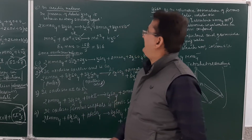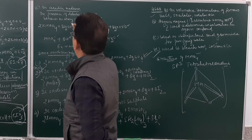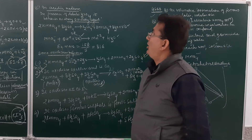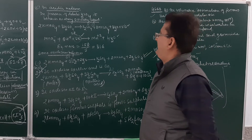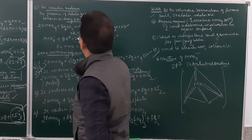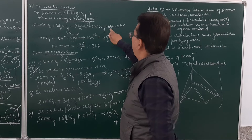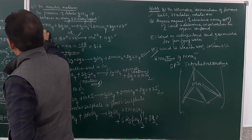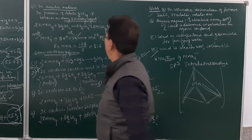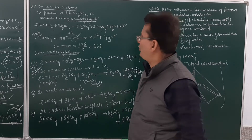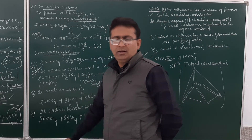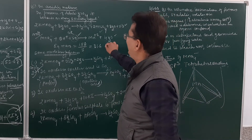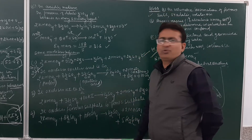In acidic medium, in the presence of dilute sulfuric acid, KMnO4 behaves as a strong oxidizing agent. The equation: KMnO4 with dilute H2SO4 forms K2SO4 plus manganese sulfate plus water and nascent oxygen. In ionic form, the manganate ion gains 5 electrons to form the manganese ion. The equivalent mass is 158 divided by 5, equal to 31.6. This can be a board examination question.